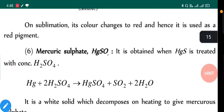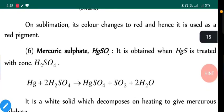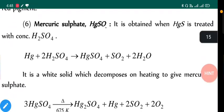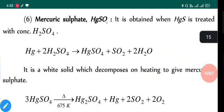On sublimation its color changes to red, and hence it is used as red pigment. Next, mercury sulfate HgSO₄. It is obtained when HgS is treated with concentrated H₂SO₄. Simple reaction: Hg + H₂SO₄ gives HgSO₄ + SO₂ + H₂O.